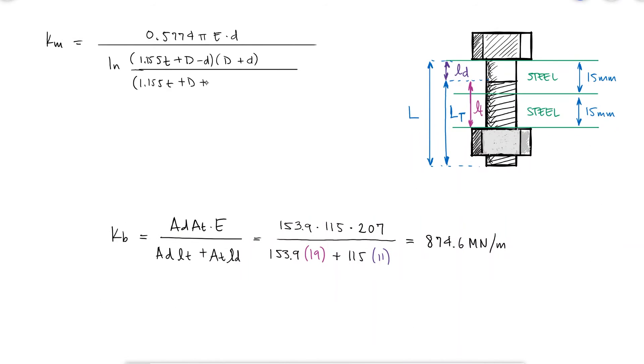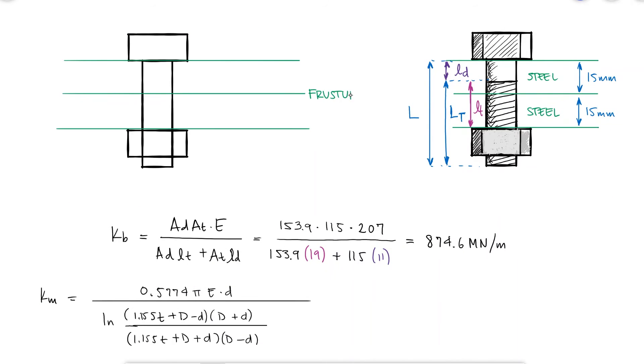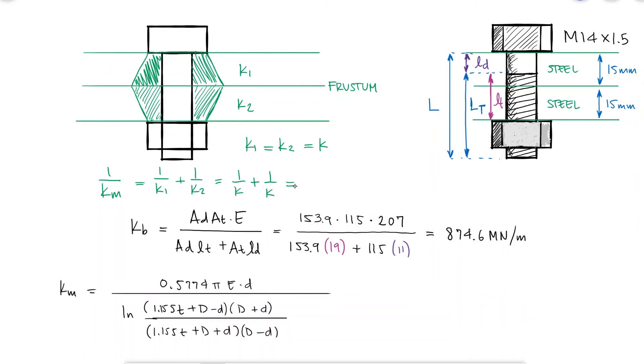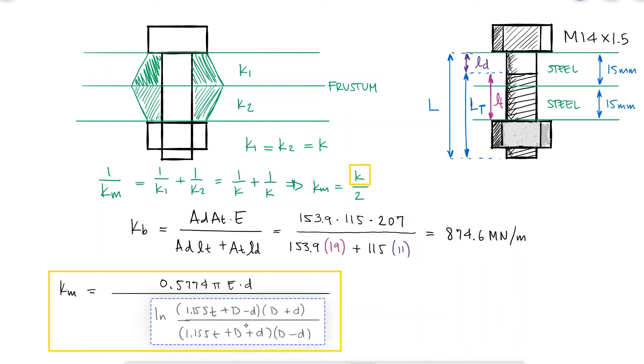For the stiffness of the members, we know that the frustrum would be located right at the middle, and since both sheets of metal are made of the same material and have the same thickness, k1 and k2 will have the same value, and therefore the equivalent stiffness, or the stiffness of the members, is the expression we have already used for each member divided by 2.